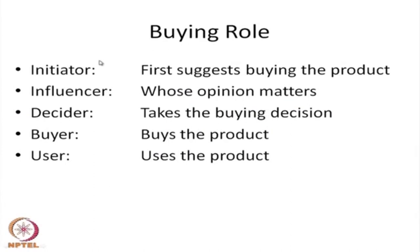A buyer has got 5 types of role. He may just be an initiator who first suggests that a product of a particular type should be bought. He or she could be an influencer whose opinion matters — an influential person in the family or friend circle. Somebody who decides we should go for this product may be the housewife. The buyer is the person who actually pays and buys the product, and the user could be a different person. So a person can have 5 roles: initiator, influencer, decider, buyer, and final user.